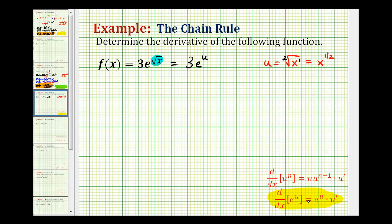So the derivative of e to the u is equal to e to the u times u prime, where e to the u is the derivative of the outer function, and u prime is the derivative of the inner function, as given by the chain rule.